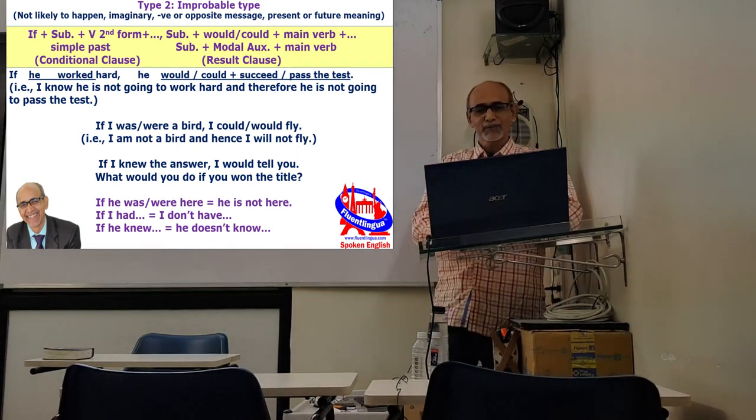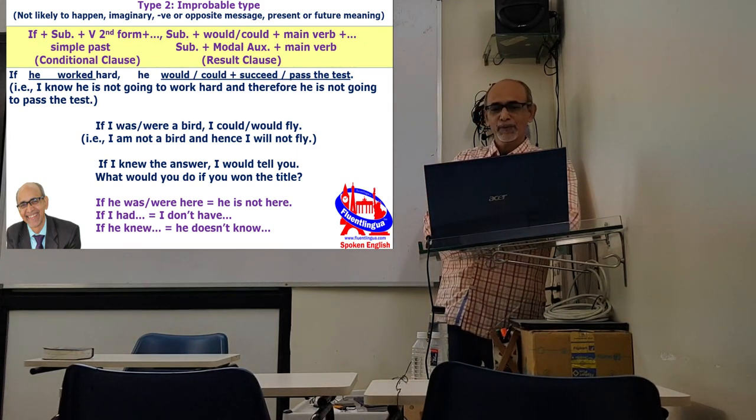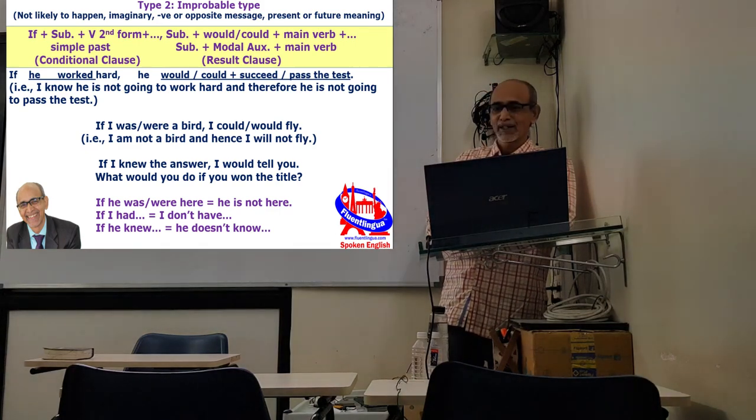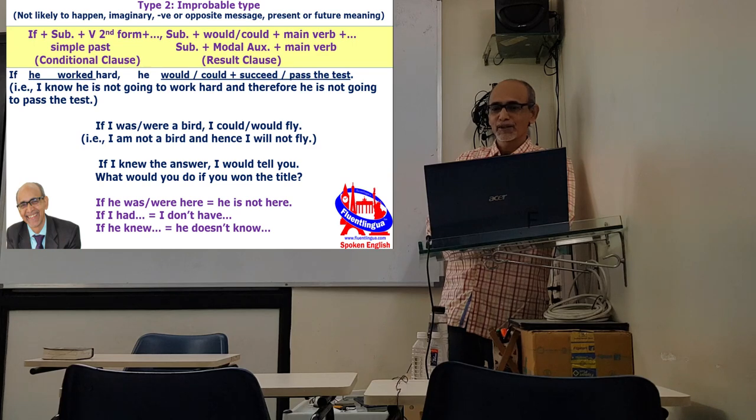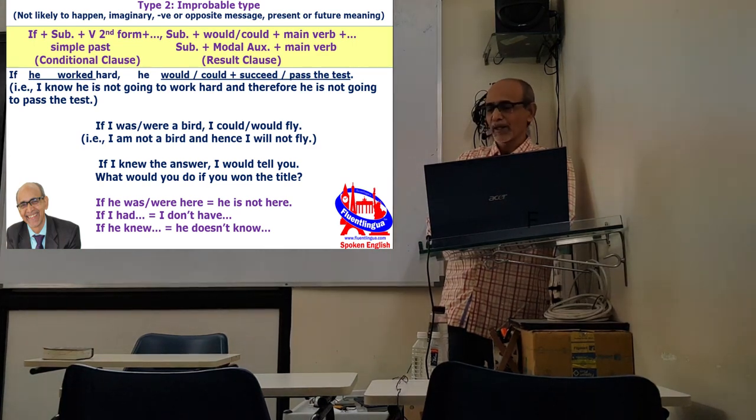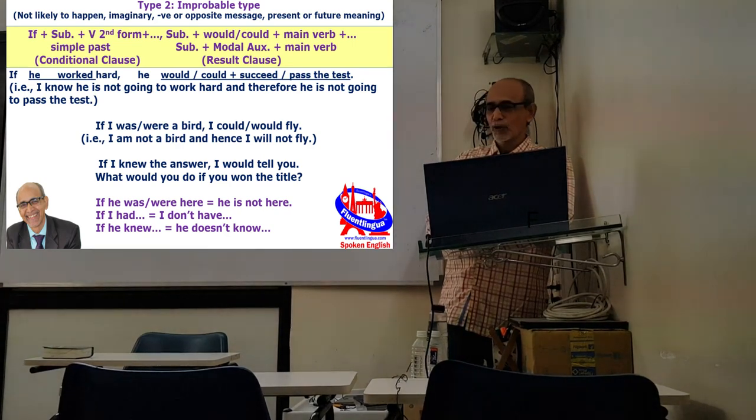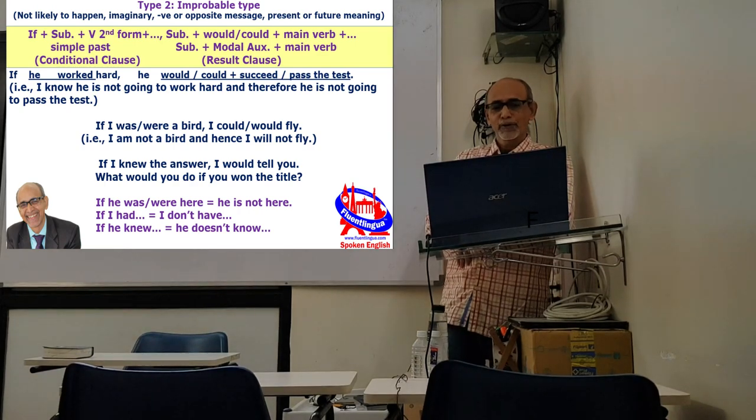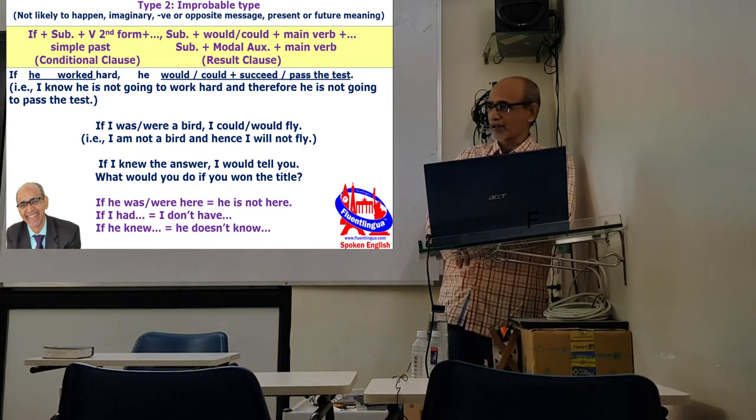If you see the sentence structure: if plus subject plus simple past tense. The conditional clause has simple past tense and the result clause is subject plus either would or could depending on the meaning and verb. Here we normally take would and could in our day-to-day life communication.